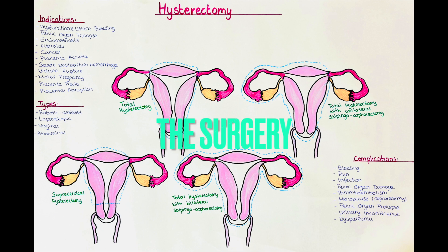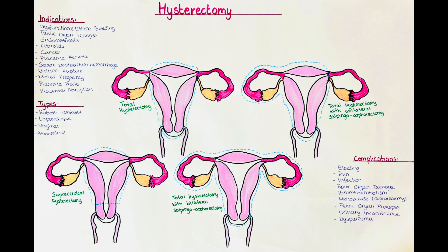How is a hysterectomy performed? The patient is placed under general anesthesia. The surgeon then makes an incision in the vagina, abdomen, or both, depending on the type of hysterectomy being performed. The surgeon locates and disconnects the blood vessels that supply blood to the uterus, then removes the uterus and, if necessary, the cervix, fallopian tubes, and ovaries. The surgeon then closes the incisions with sutures or staples.